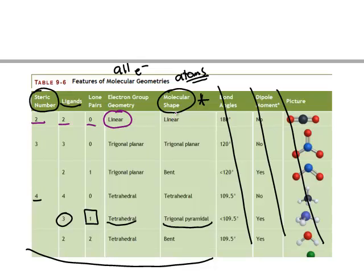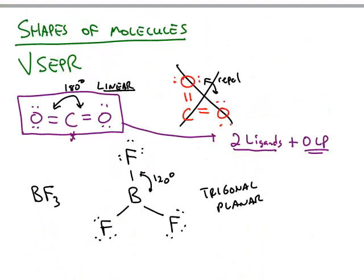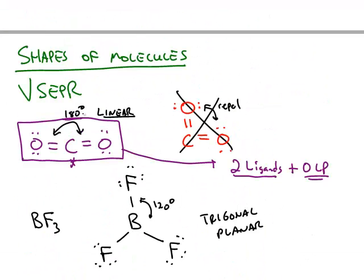the electron geometry and the molecular geometry are both linear, which is what we knew the shape was going to be. This shows that 180 degree angle from the oxygen to the carbon to the other oxygen.